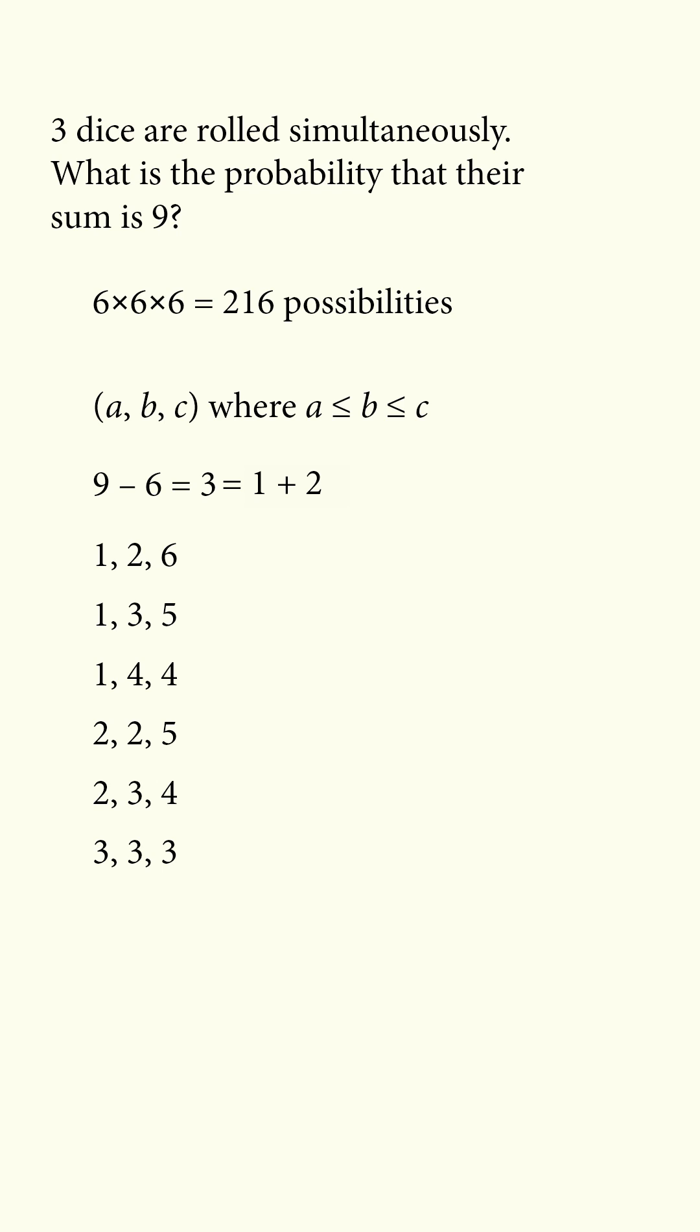We now need to count the number of arrangements of each of these. So the first has 3 factorial, the second has 3 factorial, the third has a repeated 4, so it'll be 3 factorial over 2 factorial, same for the fourth.